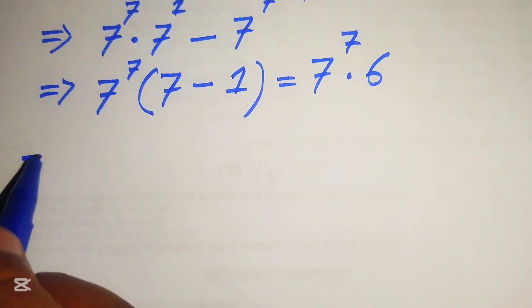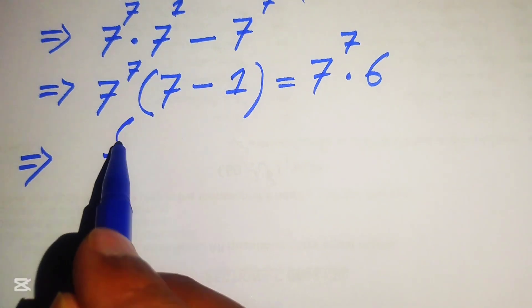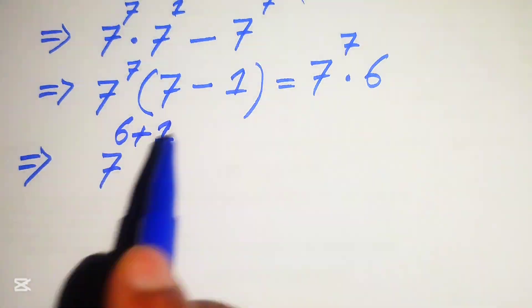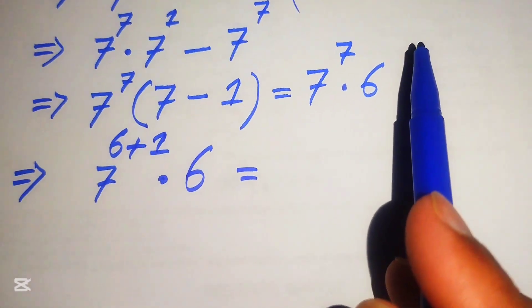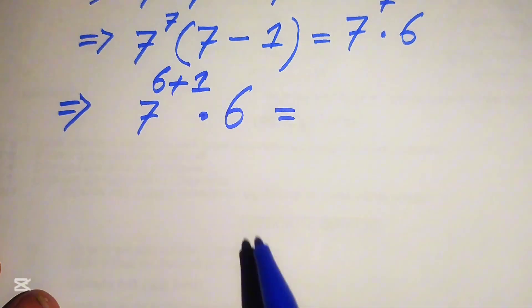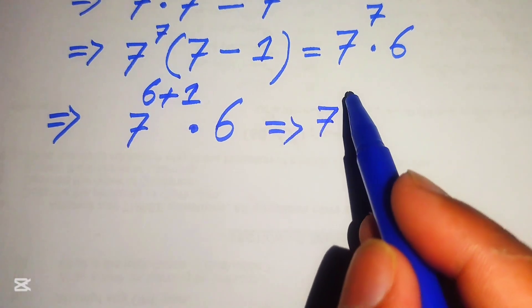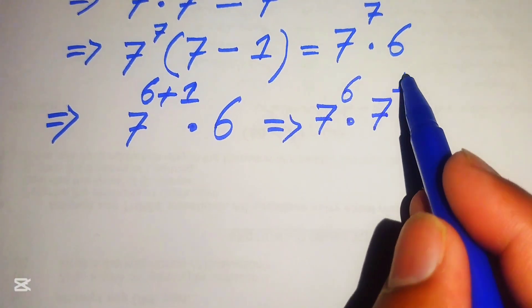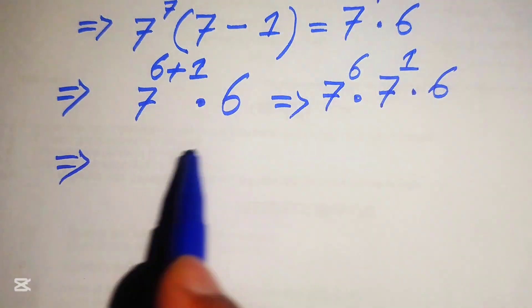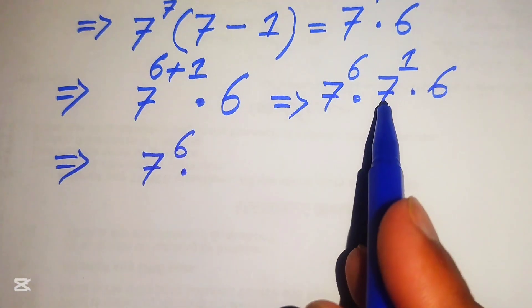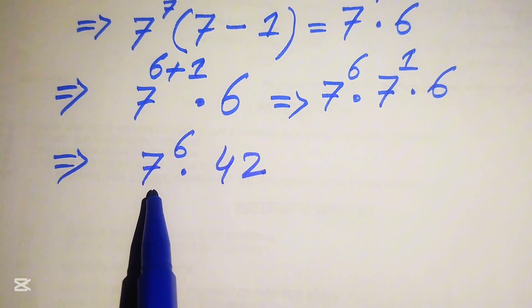We focus on the 7 to the power of 7 term and rewrite the exponent as 6 plus 1 — since 6 plus 1 equals 7 — multiplied by 6. Applying the exponent law again, we write this as 7 to the power of 6 multiplied by 7 to the power of 1, multiplied by 6. So we have 7 to the power of 6, multiplied by 7 times 6, which gives 7 to the power of 6 multiplied by 42. Our next target is to find 7 to the power of 6.